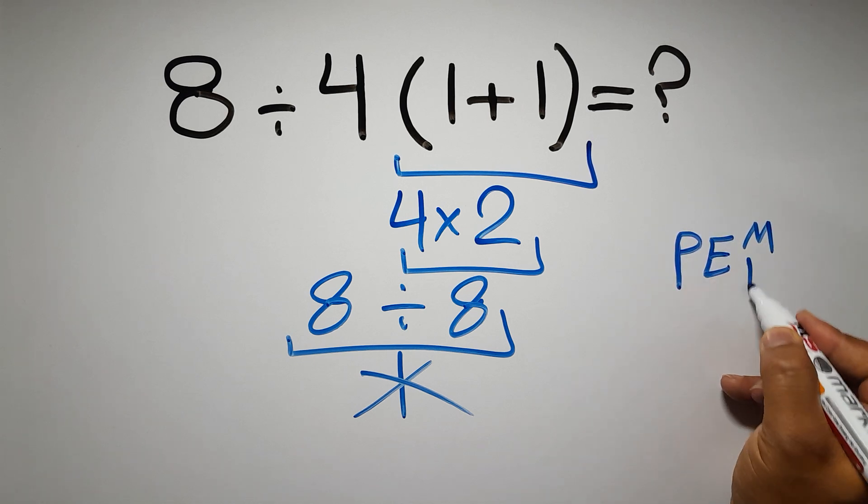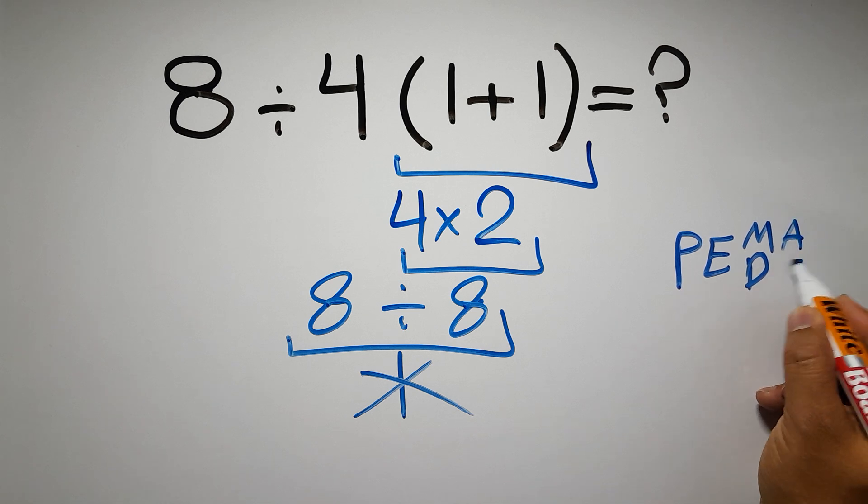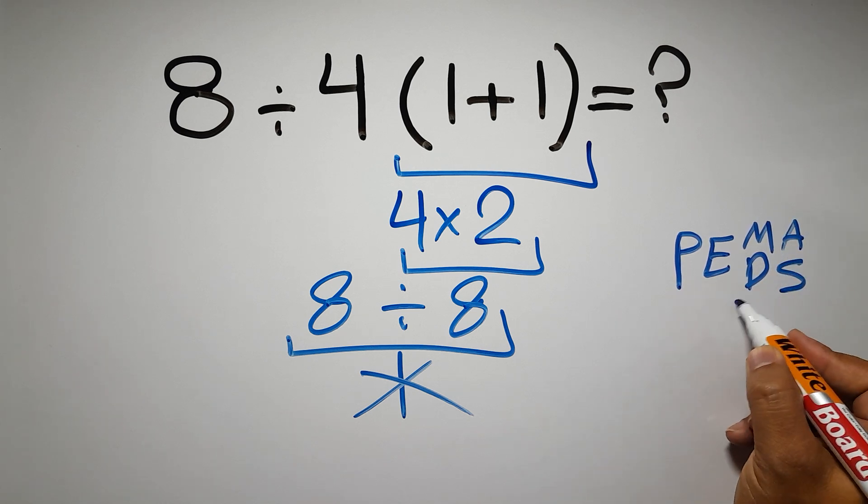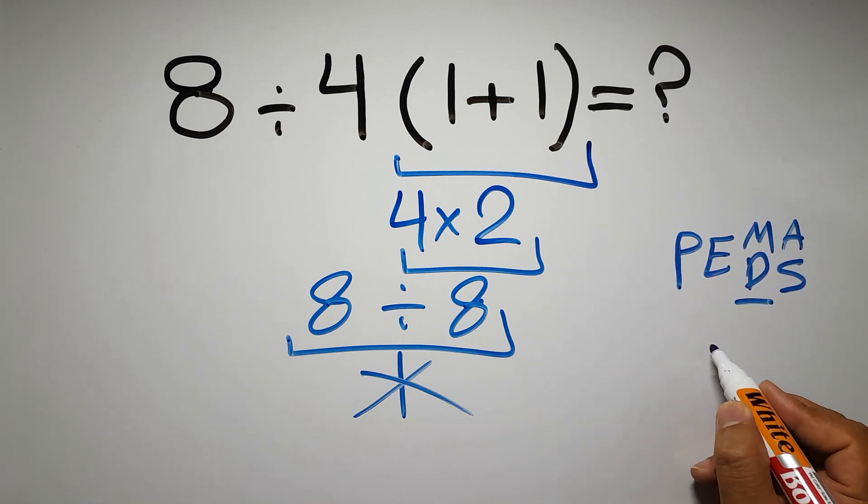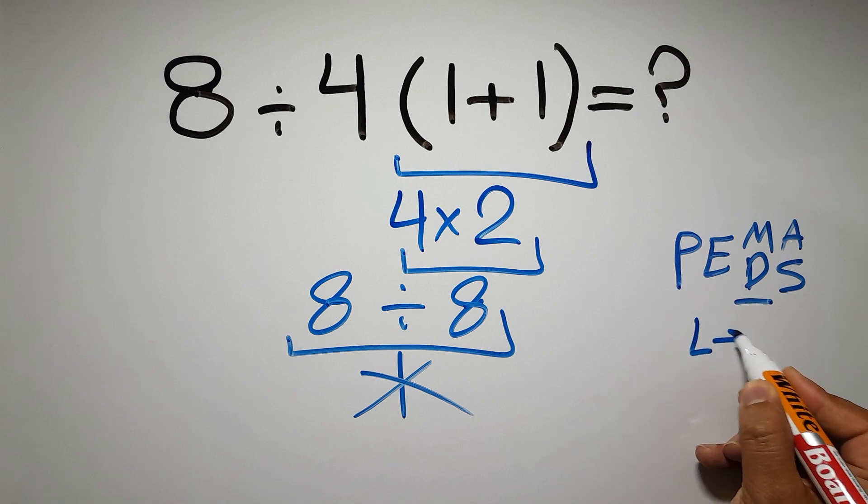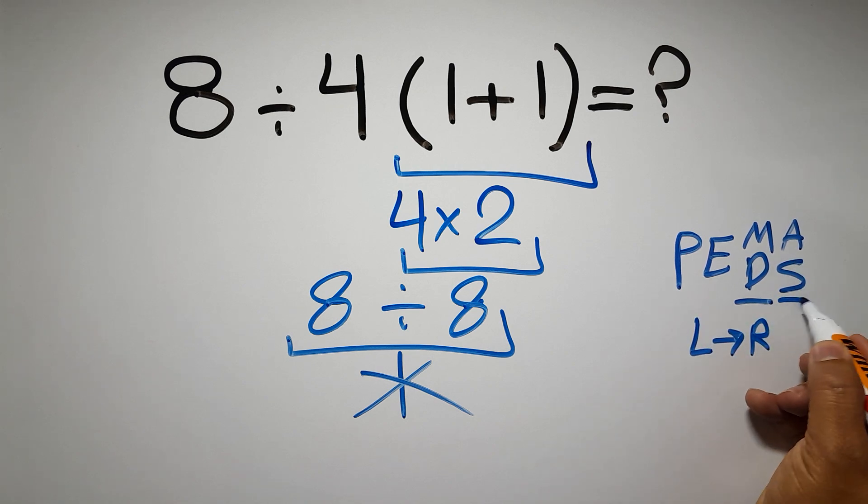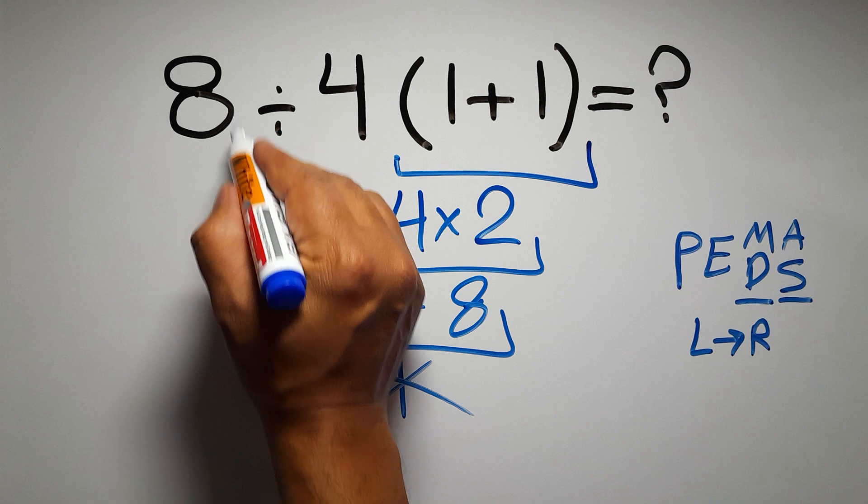Then multiplication or division, and finally addition or subtraction. Remember that multiplication and division have equal priority and we have to work from left to right. The same applies to addition and subtraction.